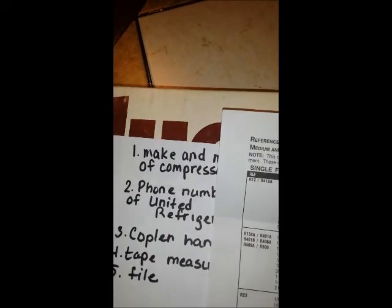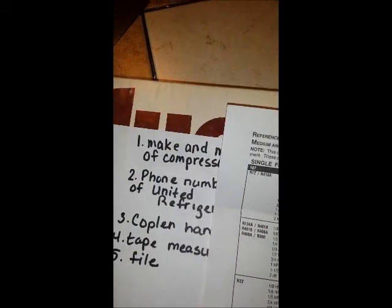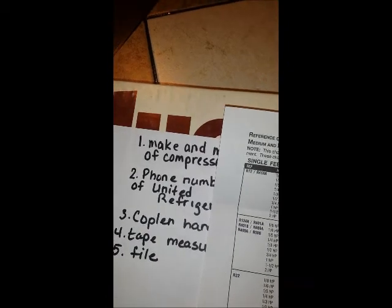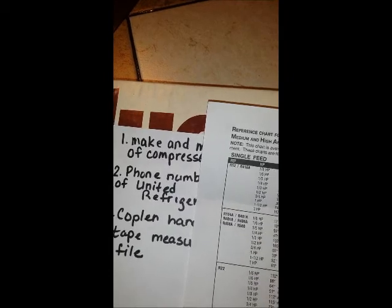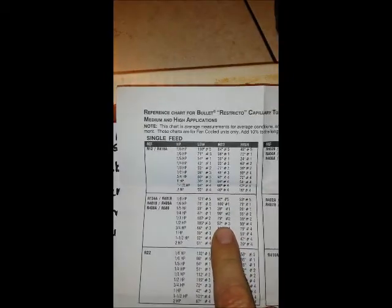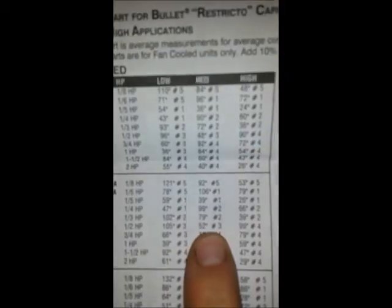So that's going to be right here, medium temp, because it's a cooler. And we're going to find half horse right here. So the capillary tube has to be 52 inches long and number three.